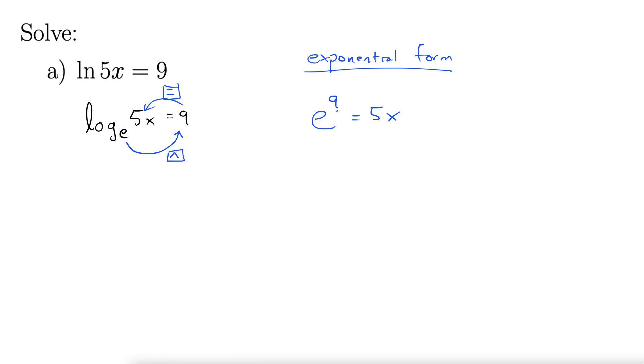And now remember, e is just a number, so we'll treat it like any other number, and we're solving this for x. So here we can divide both sides by 5. This gives us x equals e to the 9 over 5.